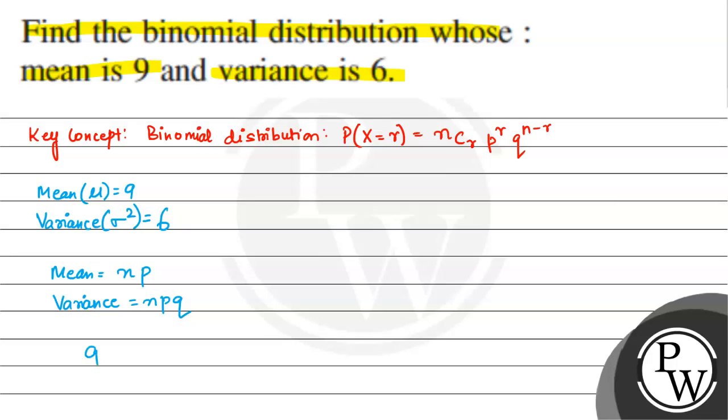Mean diye rakhe hai mujhe 9. So 9 is equal to np, and variance hai npq. 6 is the variance which is equal to npq.